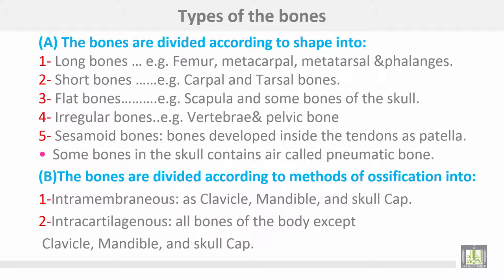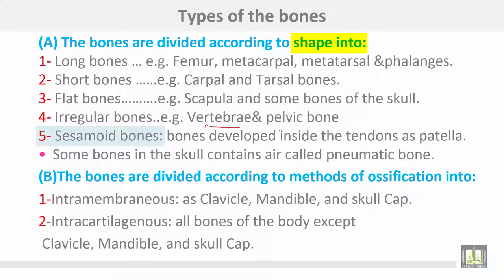Types of bones are divided according to shape into: long bones such as the femur, metacarpals, metatarsals, and phalanges; short bones such as carpal and tarsal bones; flat bones such as the scapula and some bones of the skull; irregular bones such as vertebrae and pelvic bone; and sesamoid bones, which are bones developed inside the tendon, such as the patella.